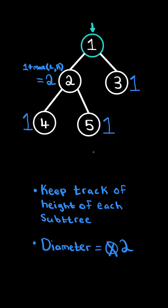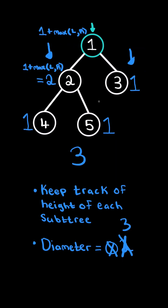Now let's consider the recursive step on node 1. It has a left subtree of height 2, and a right subtree of height 1. And so we can calculate the diameter by taking the sum of both the heights, and we can update our global diameter. And lastly, we can return the height, which is equal to 1 plus the max of the left or right subtree height. At this node, the height is 3.